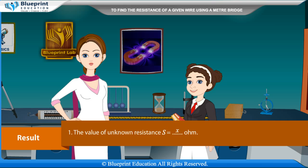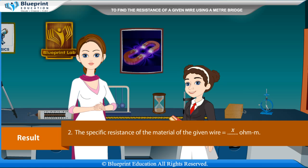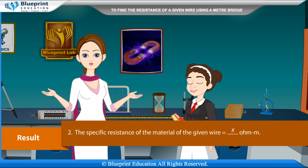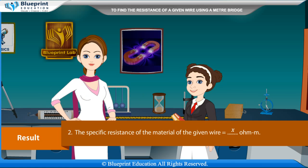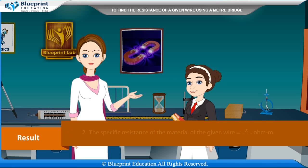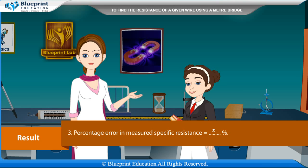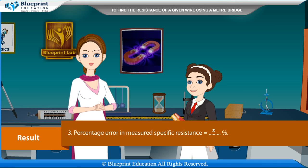Results: The value of unknown resistance S = X ohm. The specific resistance of the material of the given wire = X ohm·meter. Percentage error in measured specific resistance = X percent.